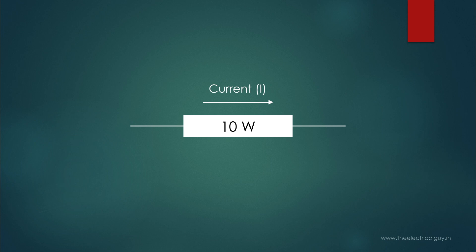This 10 watts indicates that this resistor is capable of dissipating 10 watts of power as heat without building any dangerous temperature rise. And that is what we call as power rating of a resistor.